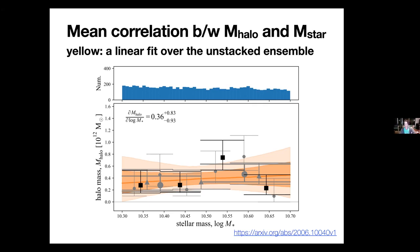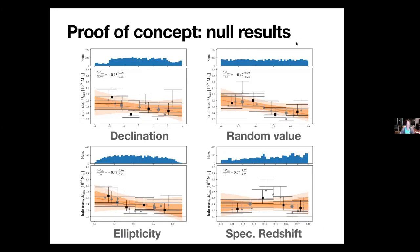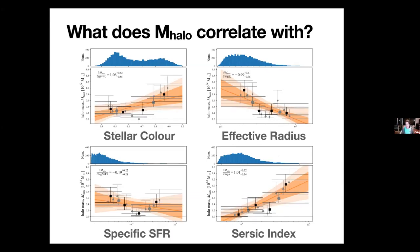This is my basic approach — quantifying the correlation between halo mass and other properties. Just to prove this works, here are some null results: there is no trend between halo mass and declination, no correlation with a random value, no correlation with ellipticity — which would be a bad thing for a weak lensing result — and no trend with redshift. Now looking at real properties, you can see signals that pop out. Stellar color looks a bit weak. Specific star formation rate also. But Sérsic index just smacks you in the face — that's the trend I find the most compelling.